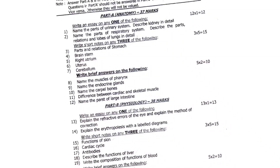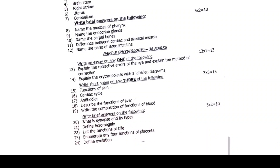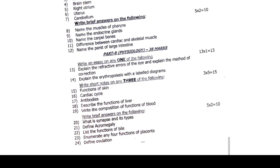Next is February 2022 Anatomy and Physiology question paper. Anatomy essay: name the parts of the urinary system and describe the kidney in detail. Name the parts of the respiratory system and describe the parts, relations and lobes of the lungs in detail. Short notes: parts and relations of stomach; brainstem; right atrium; uterus; cerebellum. Brief answers: name the muscles of pharynx; name the endocrine glands; name the carpal bones; differentiate between cardiac and skeletal muscle; name the parts of the large intestine. Physiology: explain the refractive errors of the eye and the methods of correction. Fourteenth question: explain erythropoiesis with a labelled diagram. Short notes: functions of skin; cardiac cycle; antibodies; describe the functions of liver; write the composition and functions of blood. Brief answers: what is synapse and its types; define acromegaly; list the functions of bile; enumerate any four functions of placenta; define ovulation.